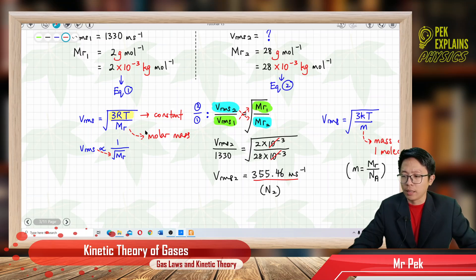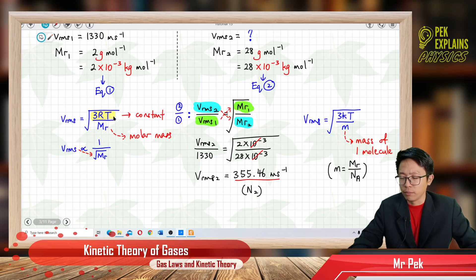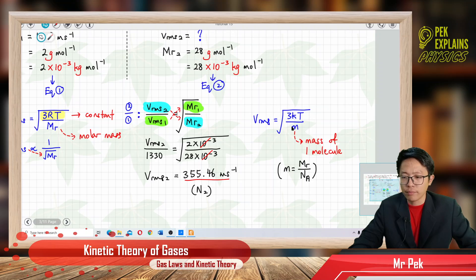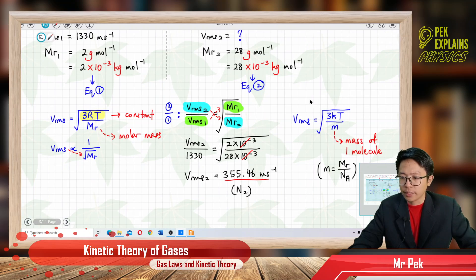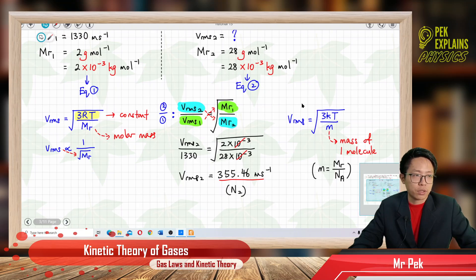To summarize: if the question gives you molar mass, use the formula with 3RT. If the question gives you mass of one molecule, use the formula with 3KT. Thank you for watching — stay tuned for the next video.